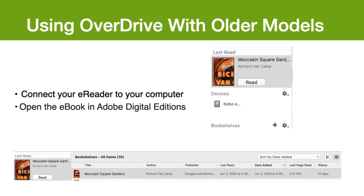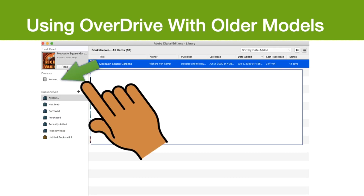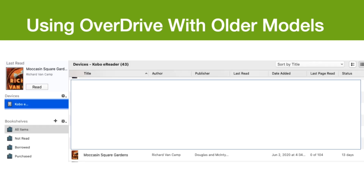Connect your Kobo to your computer. You will then have to select Connect on your Kobo device to connect to the computer. You should see Kobo under Devices on the left side of the screen of Adobe Digital Editions. To transfer the title to the Kobo, drag the book to the Kobo under Devices. Once the book has been transferred, it will appear once you click on Kobo. After the titles have been transferred, you can eject the Kobo.